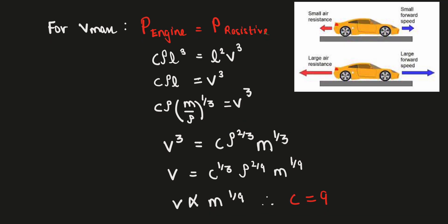So the power of the engine would be equal to the power of the resistive force. I'm taking the modulus, or I can write the sum would be zero. So c·ρl³, which is power of the engine, equals l²v² times v. From here I get v³ = c·ρ·l.